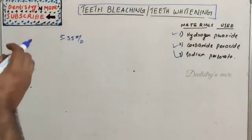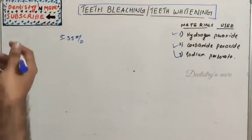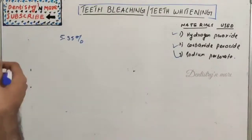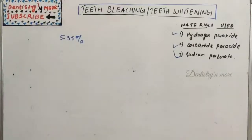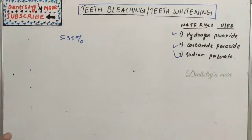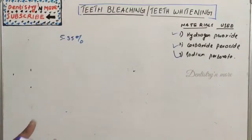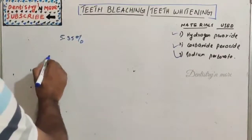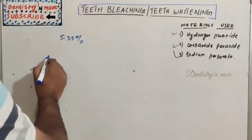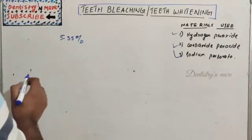Sodium perborate is a stable white powder that comes in three types: sodium perborate monohydrate, trihydrate, and tetrahydrate. When mixed into a paste with super oxal, it decomposes into sodium metaborate, water, and oxygen. It is used in the walking bleach technique.